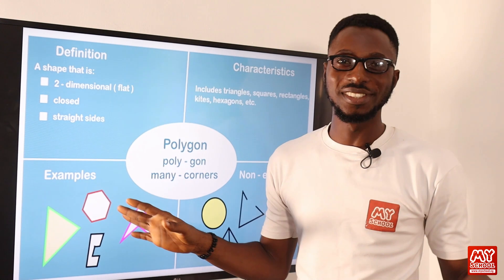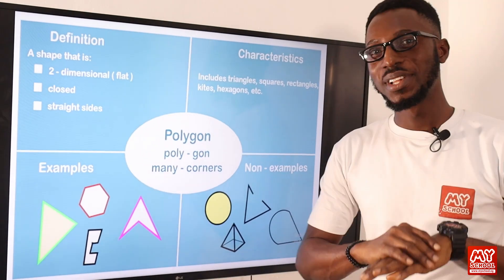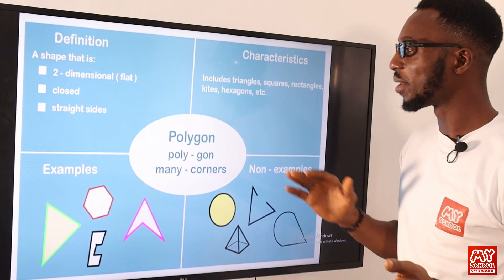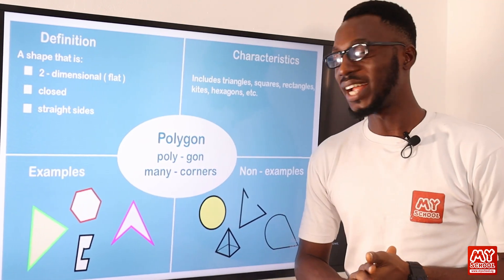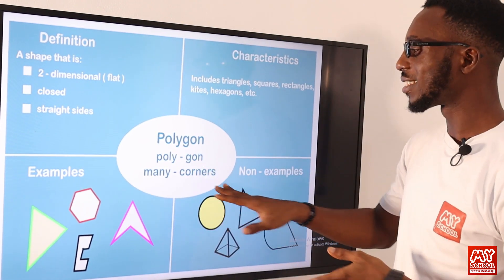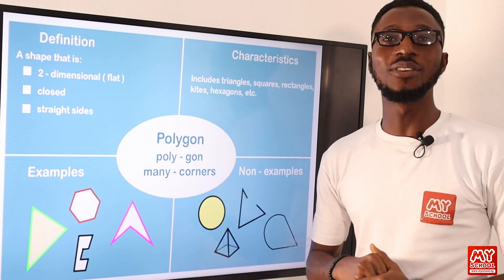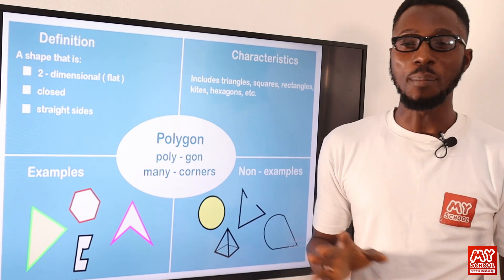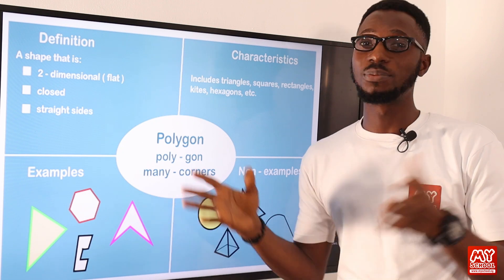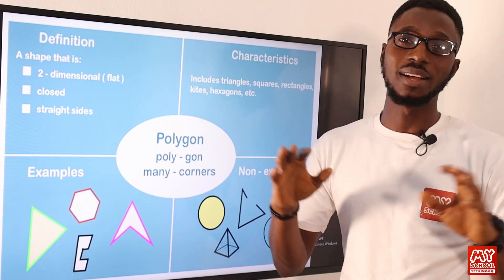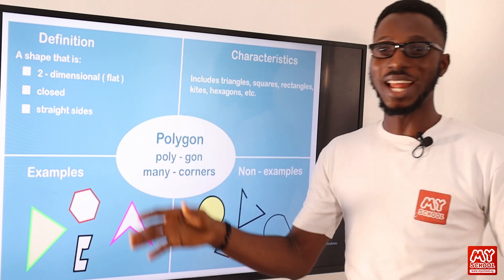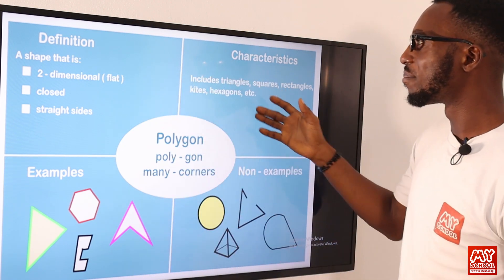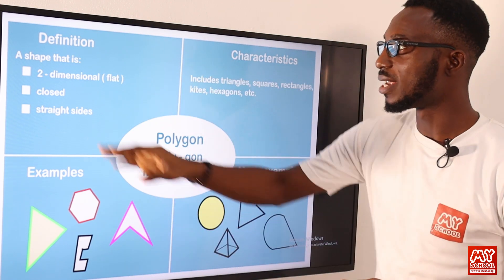Welcome back to my YouTube channel. So we have polygons. Let's look at some descriptions or definitions of polygons. Polygon — poly means many, and 'gon' talks about corners. Just like when you come to biology, bio means life and logi, which is the logos, means study — so study of life. Right here, polygon means many corners.